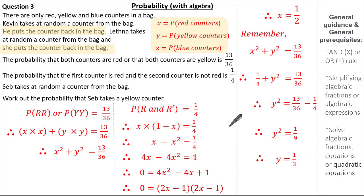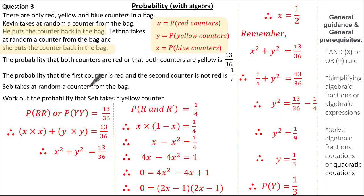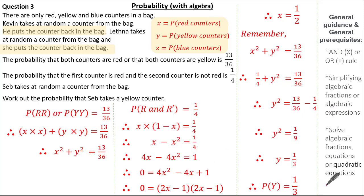Given the question wants us to work out the probability of a yellow counter, the probability of a yellow counter is 1 over 3. In summary, when tackling questions involving probability and algebra: always read the question and identify your unknowns according to what the question wants; try to be consistent with your unknowns so it's easier to form and solve equations; and remember it's really important to have prerequisite knowledge on solving algebraic fractions or quadratic equations.